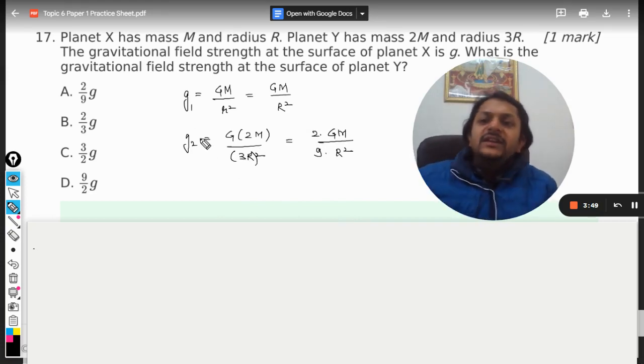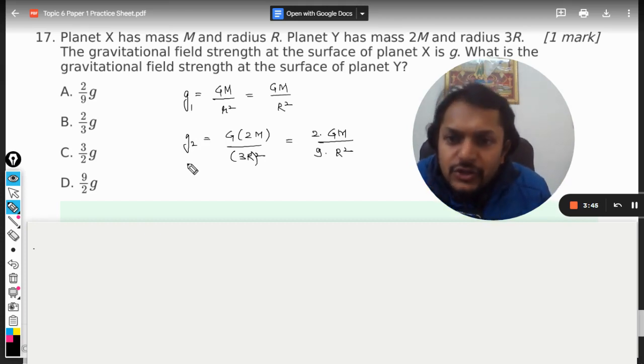Now what is the gravitational field strength at the surface of planet Y? So g2 is planet Y, so we are just going to substitute it here, so it will come out to be 2/9 into g.